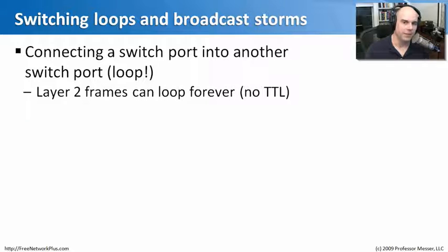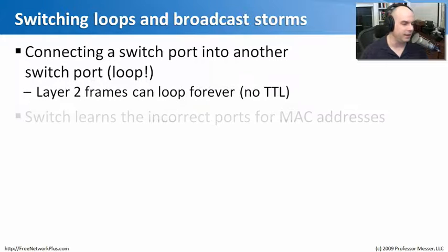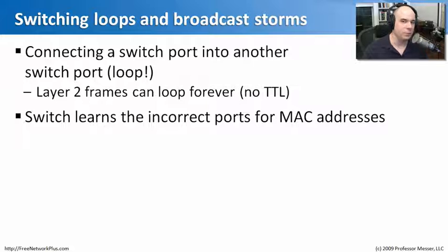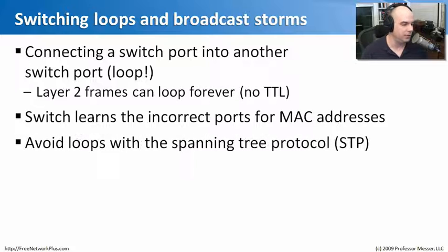Unlike the IP protocol, there's no time-to-live variable within these Ethernet frames. So when you plug it into the switch, it could just loop forever. And the more traffic you have on the network, the more it will loop. Ultimately, what you find is the switch itself learns completely wrong information about where traffic is — it gets confused about where anything's located, and this can cause serious, serious problems.